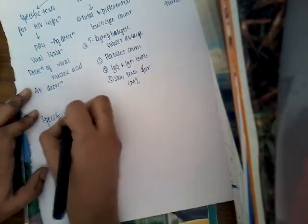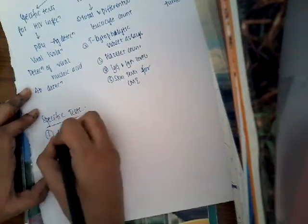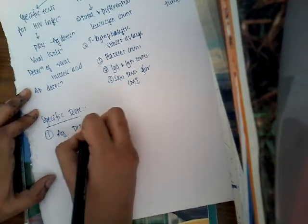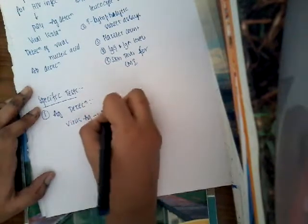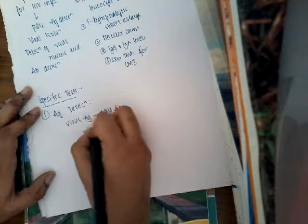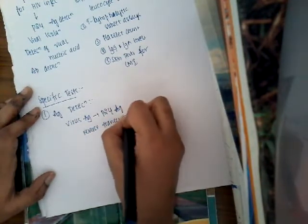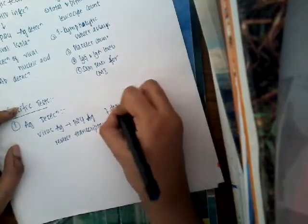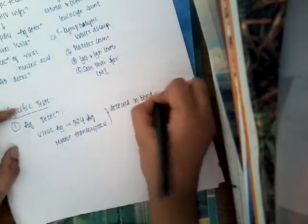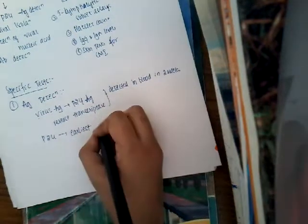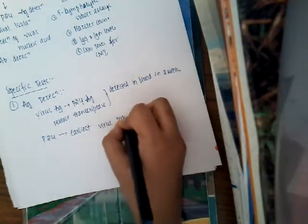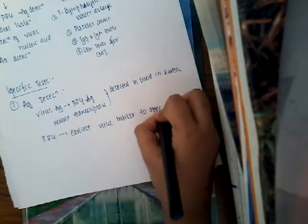Now let us learn about the specific tests for HIV infection. The first is antigen detection. In antigen detection, the virus antigens — P54 antigen and reverse transcriptase — are detected in blood within two weeks. The P54 antigen is the earliest viral marker to appear in blood.